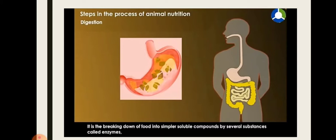Food contains different components called nutrients — like carbohydrates, fats, minerals, proteins, and vitamins — which are required for maintenance of the body. These components are very complex and cannot be used directly; they must be broken into simpler form. The process where large, insoluble food particles are broken into smaller, soluble, or simpler substances is known as digestion.